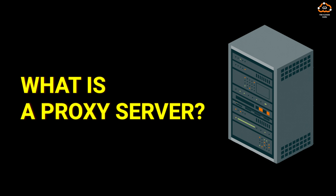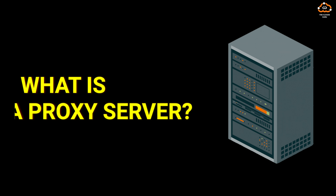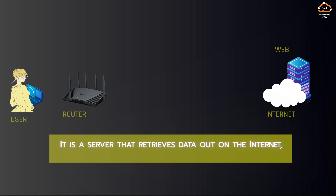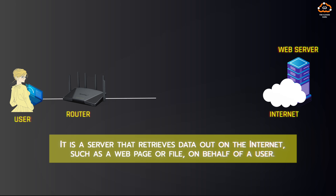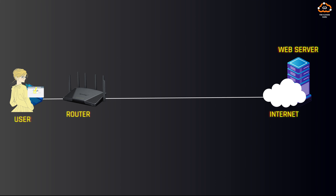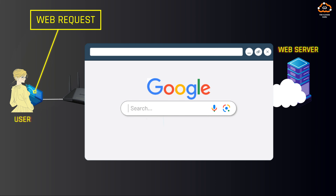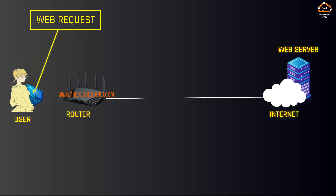Let's jump to a proxy server's basic definition. It is a server that retrieves data out on the internet, such as a web page or file, on behalf of a user. For example, when you would like to open a web page on the internet, you will open a web browser and then type in the search engine the web address and retrieve the page from its web server.